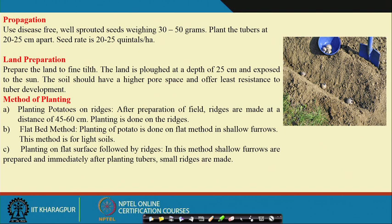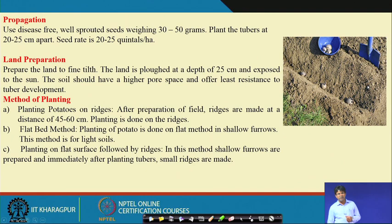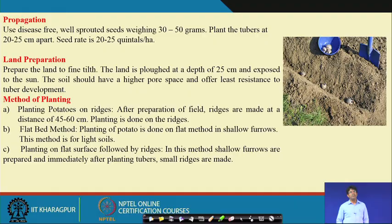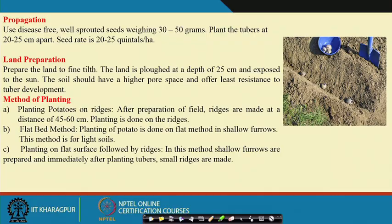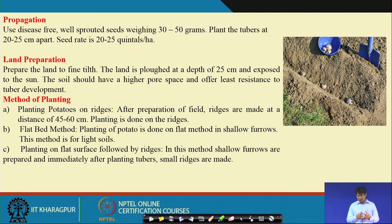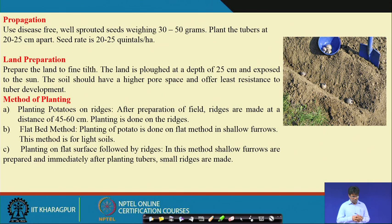The flatbed method involves making shallow furrows, placing the potato seed pieces, and covering them. This is followed in areas where there is less or no chance of heavy rainfall. However, even with the flatbed method, after emergence you must go for earthing up and ridge formation. Planting on a flat surface followed by ridge formation is also practiced. Overall, planting on ridges is most preferred as it avoids water accumulation during heavy rainfall.